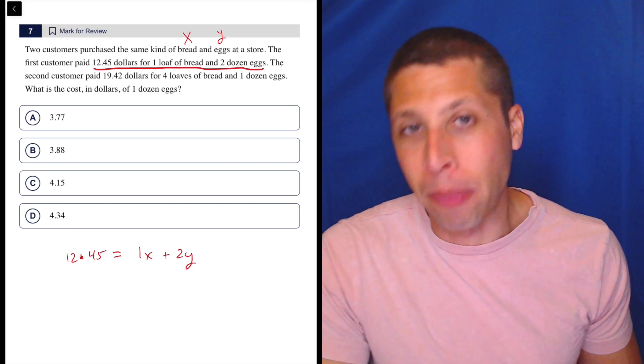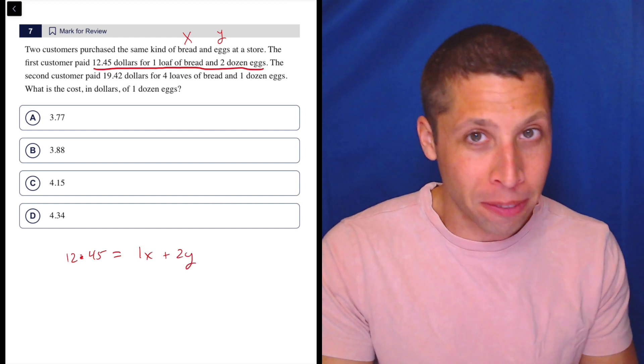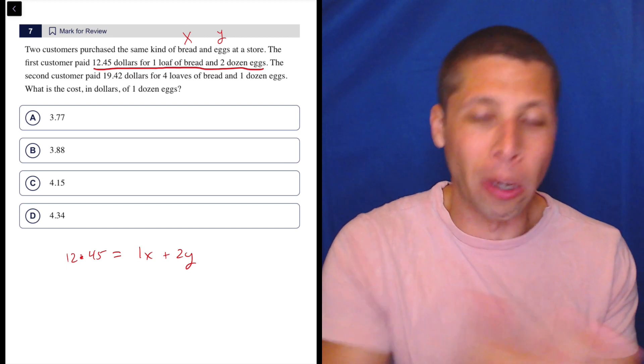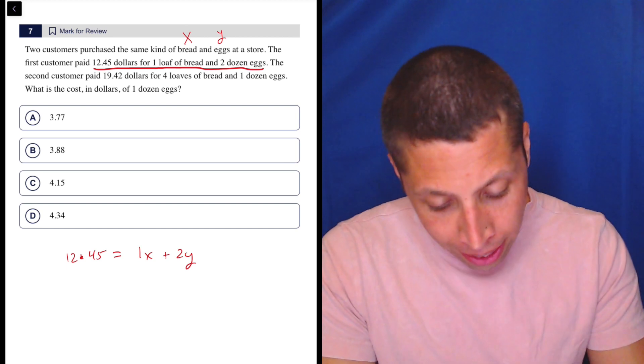So $12.45 for one loaf of bread, so one X and two eggs. I know I don't need the one, but I'm writing it because why not, right? It's just like have a clear translation from the story to the equation.